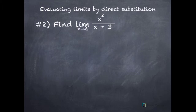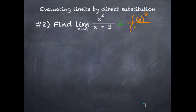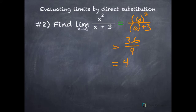Second example. We're supposed to find the limit as x approaches 6 of the fraction x squared divided by x plus 3. Let's use direct substitution. We're going to replace x with 6, because that's what x is approaching. When you substitute, you should use parentheses. 6 squared is 36, 6 plus 3 is 9, and 36 divided by 9 is 4.